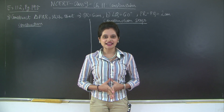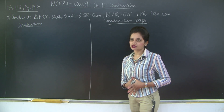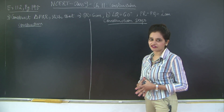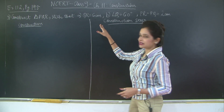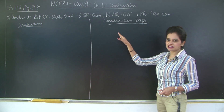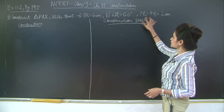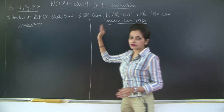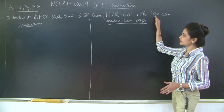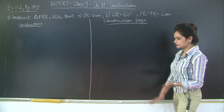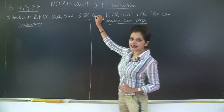Hello students, welcome back. Let us continue with chapter 11 constructions. We'll take a look at the third question of exercise 11.2 on page 195. Here you need to construct a triangle PQR such that length QR is 6 cm, angle Q is 60 degrees, and the difference of the other two sides — QR is given, so the other two sides are PR and PQ — and the difference between these two sides is 2 centimeters.